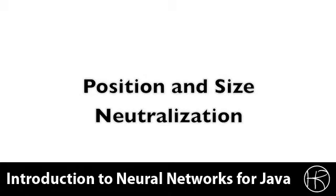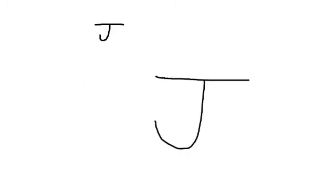This causes the downsampled image to be a consistent resolution and also to not take into account the size of the letter. Let's look at an example of how we would downsample the capital letter J in the Latin alphabet. Here you see two letter J's drawn. They are drawn at different positions and they are drawn at different sizes. We don't want the fact that you draw a J further up in the region, or further down to the right, or at different sizes, to make any difference to the neural network. These are both capital letter J's and need to be treated as such.